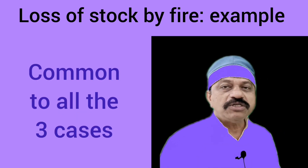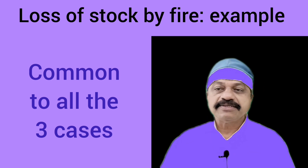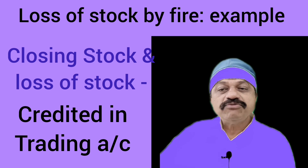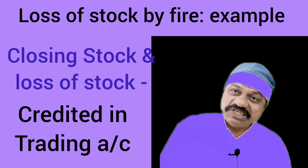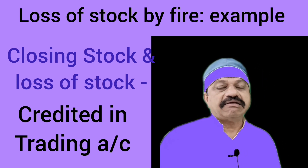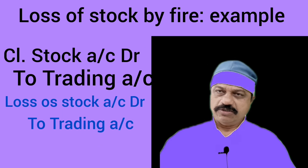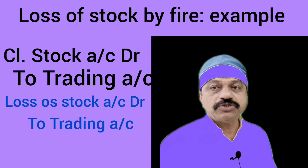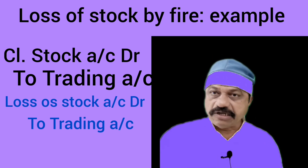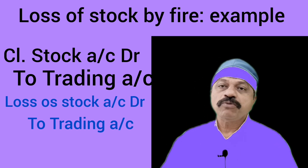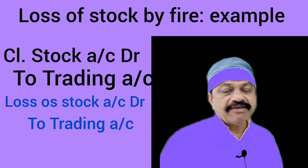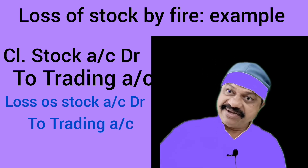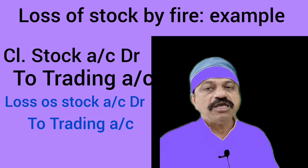In Case 3, the claim of Rs. 3,000 was accepted by the insurance company. One accounting treatment is common in all three cases — in order to arrive at the normal gross profit, loss of stock is credited in the trading account together with the closing stock. Two journal entries applicable to all cases are: Journal entry number one — closing stock account Dr. Rs. 20,000 to trading account Rs. 20,000. By this entry, we credit the value of closing stock in the trading account. Journal entry number two — loss of stock account Dr. Rs. 5,000 to trading account Rs. 5,000. By this entry, we credit the abnormal loss of stock of Rs. 5,000 in the trading account.